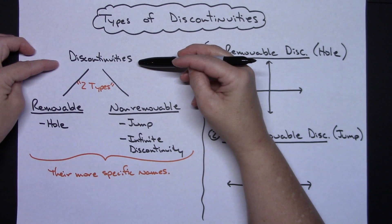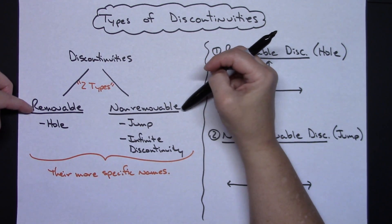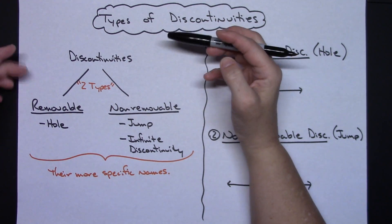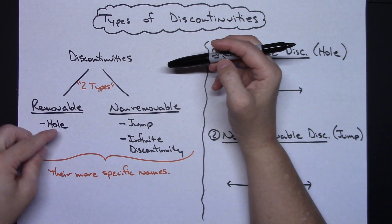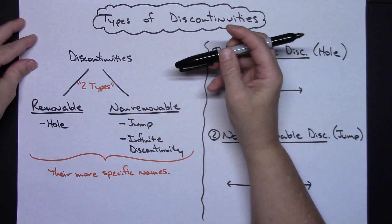In general, a discontinuity can be classified as either a removable or a non-removable. And then, if you want to be even more specific than just saying it's a removable discontinuity, you could call it a hole, because a hole is a removable discontinuity.